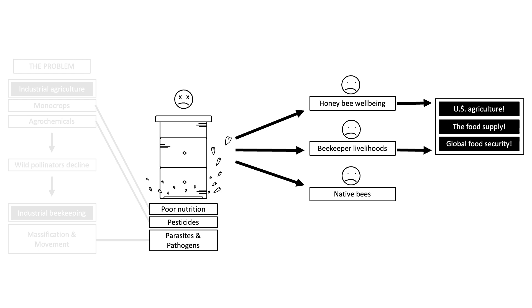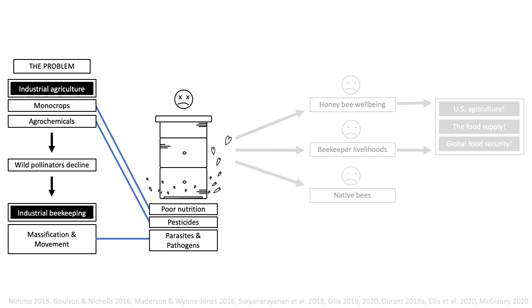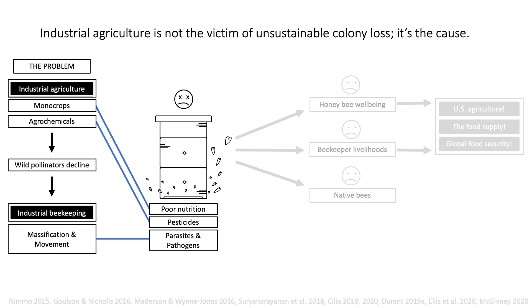To review, when honeybee researchers frame honeybee health issues, we often focus on the fact that deteriorating colony health has negative consequences for our agricultural system. But when we consider the problem of industrial agriculture, we see that colony loss is actually the logical result of the way that we farm, and the way we push honeybees to produce in conditions that are not designed to support their survival. When we broaden our framing, we find that industrial agriculture is not the victim of unsustainable colony loss. It's the cause.